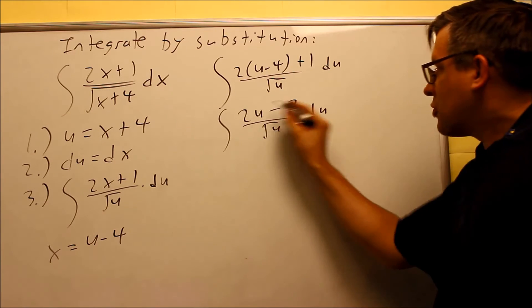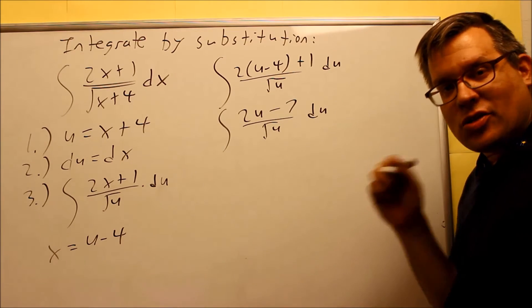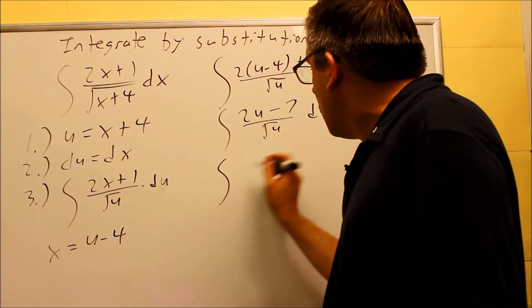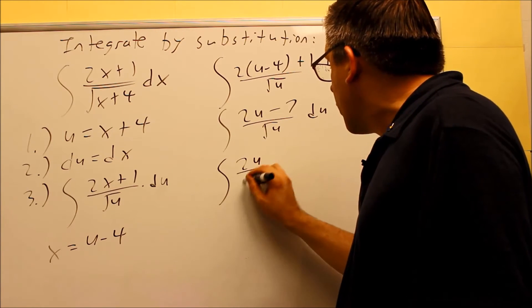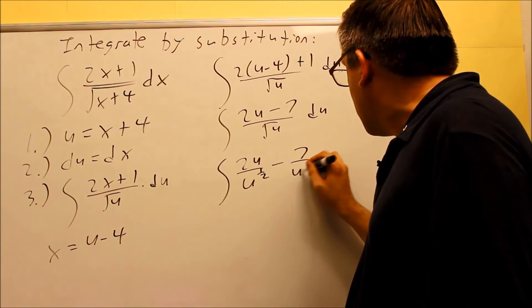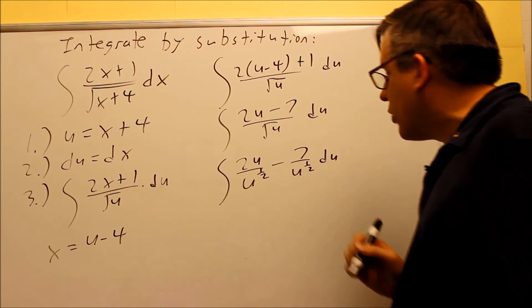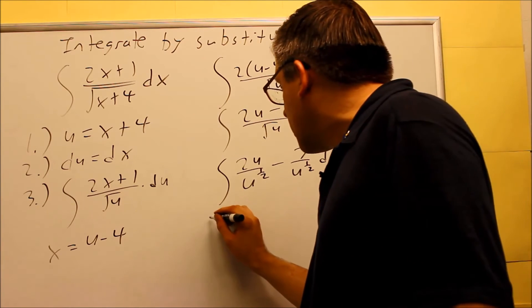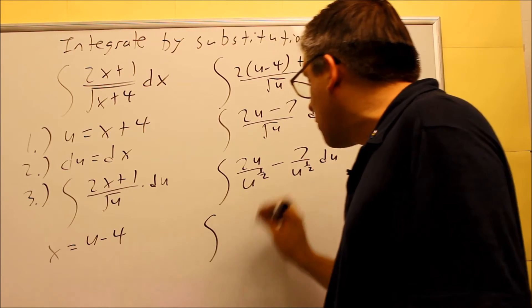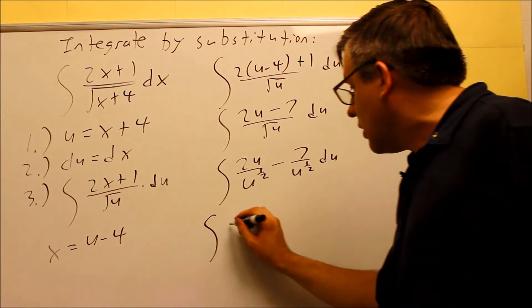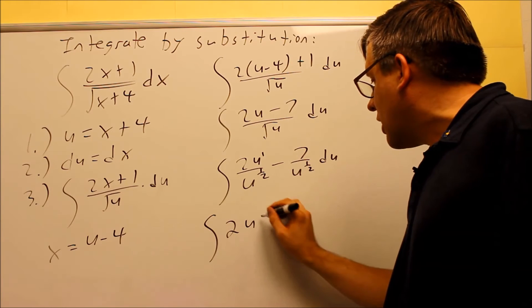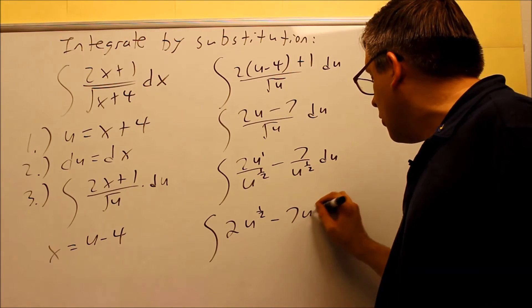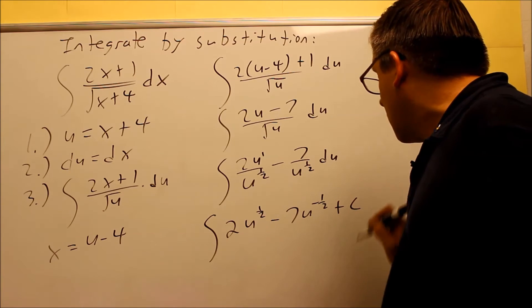What you want to do next is split this fraction up to make it easier to integrate because you want to get it all separate fractions so you can integrate each one. So we'll do 2U over U to the 1 half minus 7 over U to the 1 half. So we're going to break that up into two separate fractions. Then that's going to allow us to use the exponent properties to simplify that. I get 2U, if I subtract this, I get U to the 1 half, and this is going to be minus 7U to the negative 1 half, and then plus C.